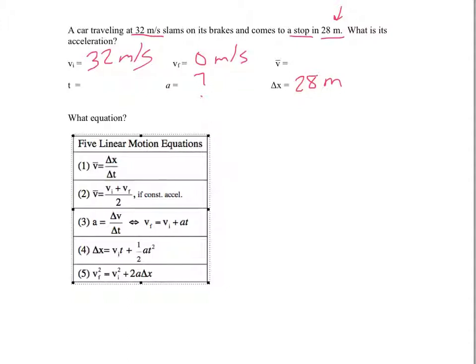So go through and find an equation that uses these variables that we know and the unknown. So the first one, again, no good because we don't have v bar. Same with the second one that's out. The third one, we don't know time, so that's no good. The fourth one, let's see, we know delta x, we know vi, we don't know time, so that one's no good. So what's left is the fifth equation. We know vf, we know vi, we know delta x, so we can find a. That will be the equation that we use for this problem.